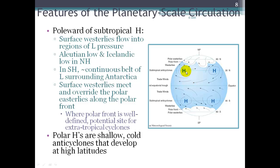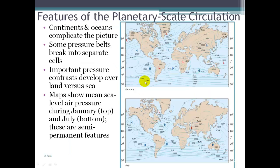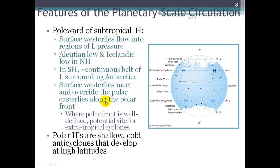As we go poleward of the subtropical highs, we have these surface westerly winds that flow into the regions of low pressure. We have the Aleutian low and the Icelandic low in the northern hemisphere. Here's the Icelandic low and the Aleutian low that are pertinent for our weather in the northern hemisphere. In the southern hemisphere, it's not broken up as much. The low pressure cell, the polar low, it's like a constant belt right along that latitude where the polar front meets because there's not as much land mass, it's more water there.